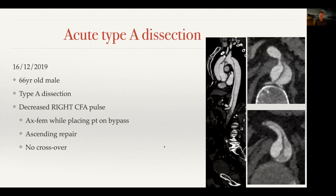Here's a 66-year-old male who presented with a type A dissection — extensive, classified as A11. I urge everyone to download the Society of Vascular Surgery consensus paper on terminology for acute dissection, which grades and describes these dissections systematically. The patient presented with a decreased right common femoral artery pulse, which is itself malperfusion. Type A dissection requires surgery, but this patient also has malperfusion — so how do you sequence treatment?